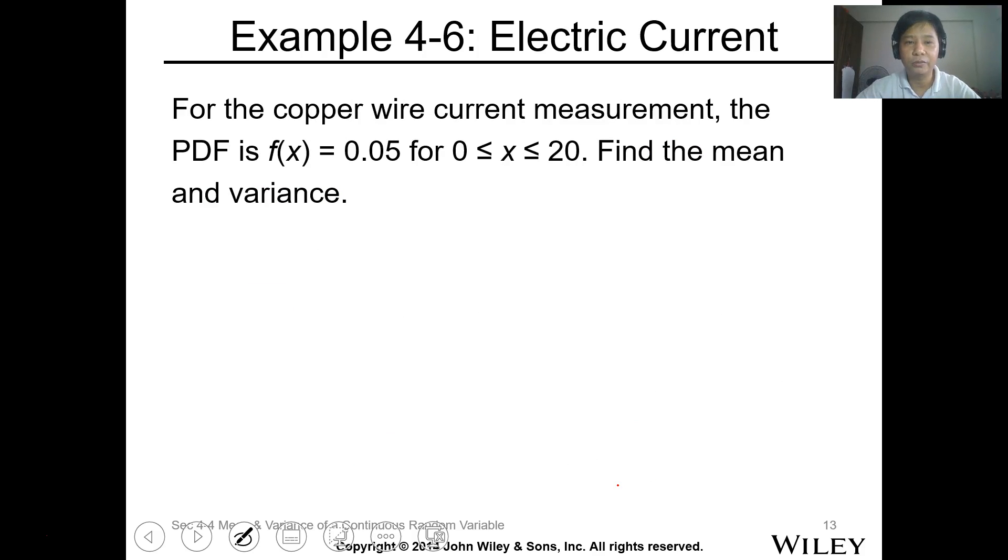So let's have this one. For the copper wire, the current measurement for the PDF is f of X equals 0.05 for X is 0 to 20. Find the mean and variance. For the mean, this is equal to E of X, which is equal to the integration of, kasi ito lang yung function, so 0 to 20 lang siya. X times your f of X which is 0.05 dx.